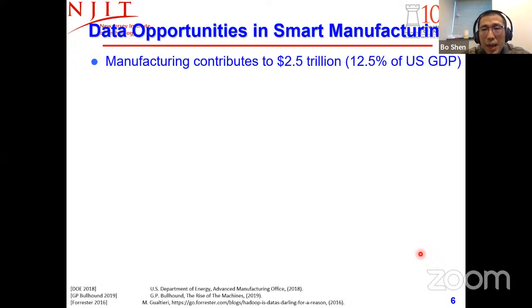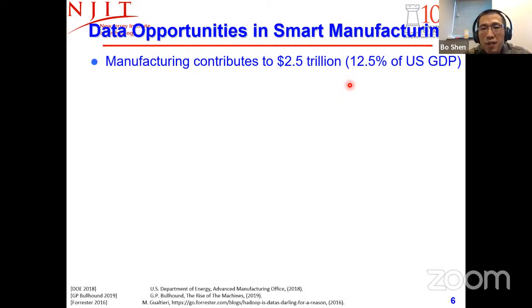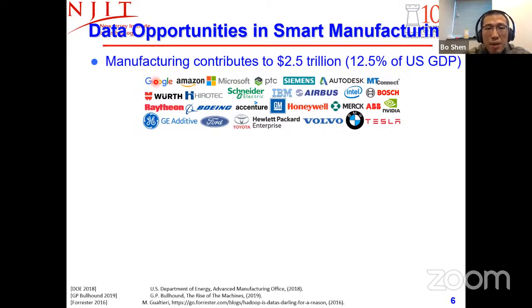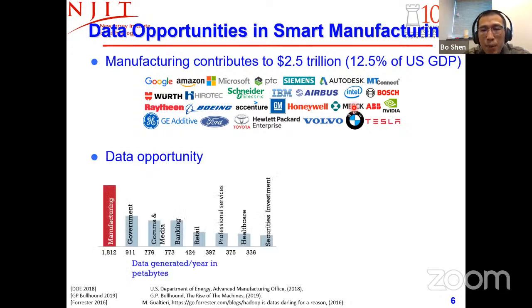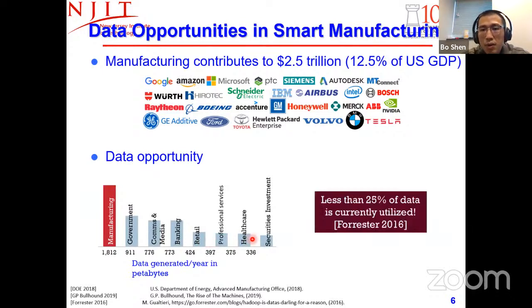There is a vast amount of data produced in manufacturing. Manufacturing contributes more than 12% to the U.S. economy, according to 2018 DOE Advanced Manufacturing Office data, with major contributors including Google, Amazon, GE, and Merck. Interestingly, manufacturing can produce more data than domains like commercial, media, banking, retail, and healthcare. However, in the literature, less than 25% of that data is currently utilized, making this a rich area still in need of investigation and research.